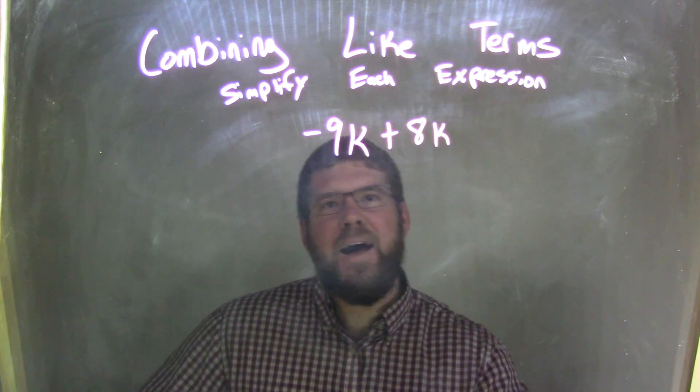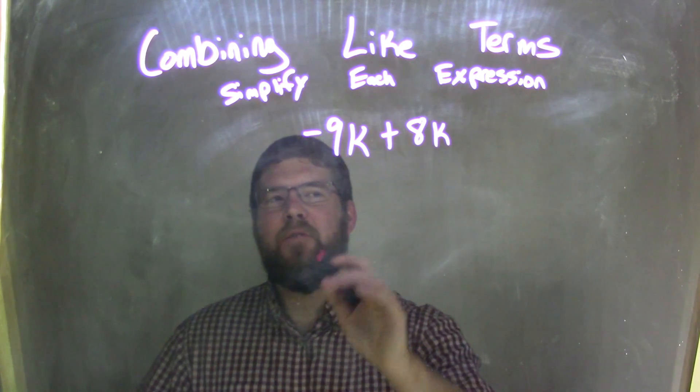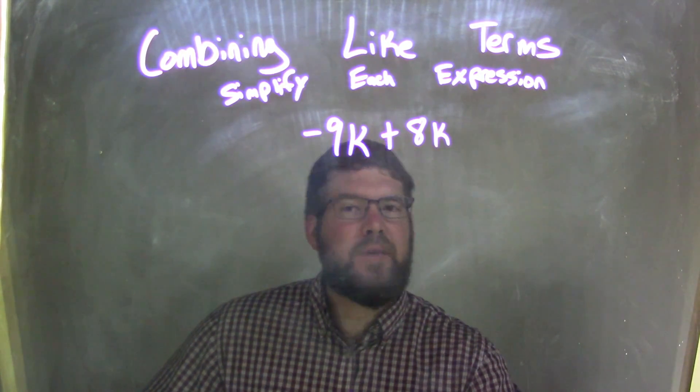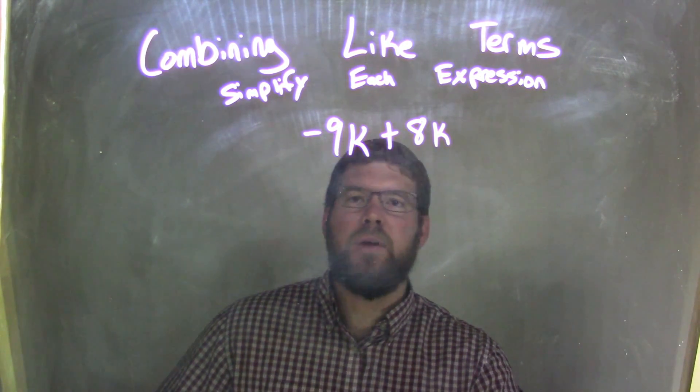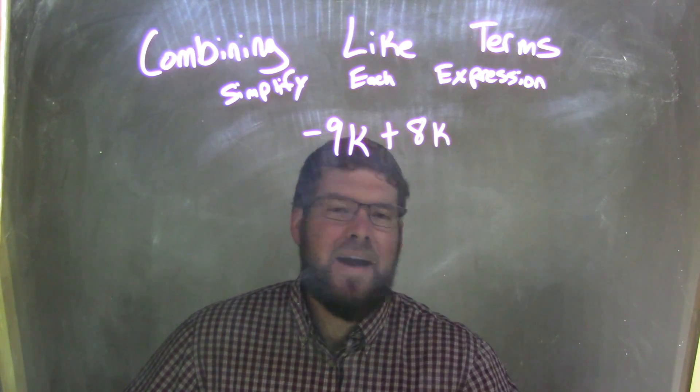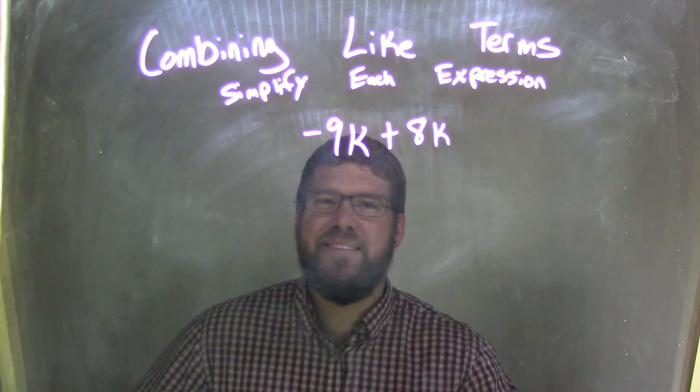But I have a hard time when I see the negative 9k first plus 8k. So sometimes I would rearrange it, and sometimes I won't. Right now, I know the answer is going to be negative k, and that's it.